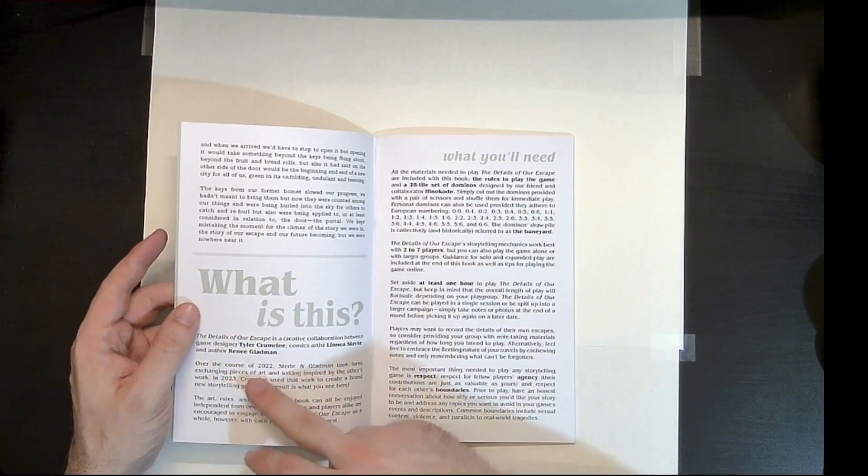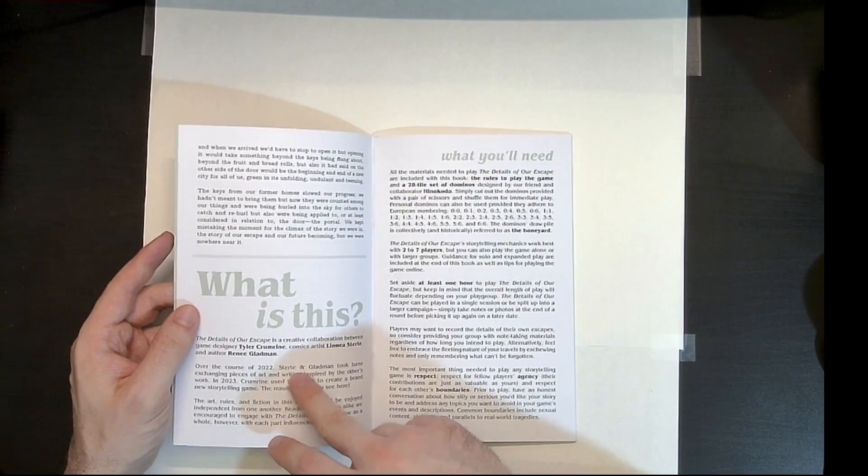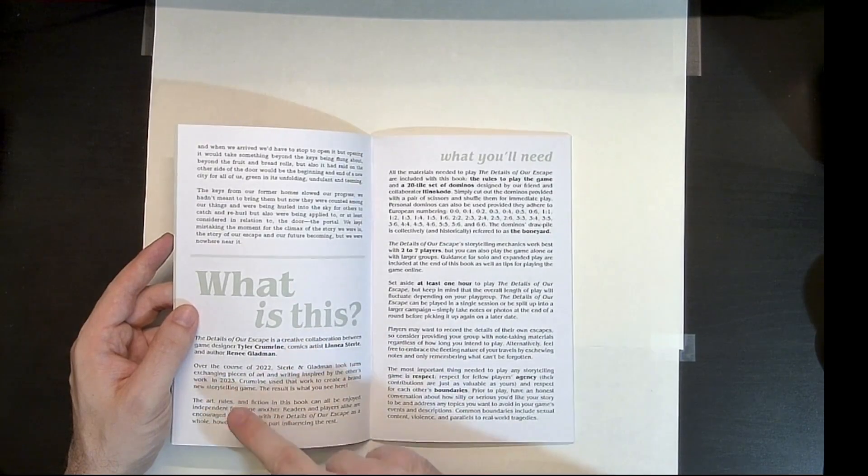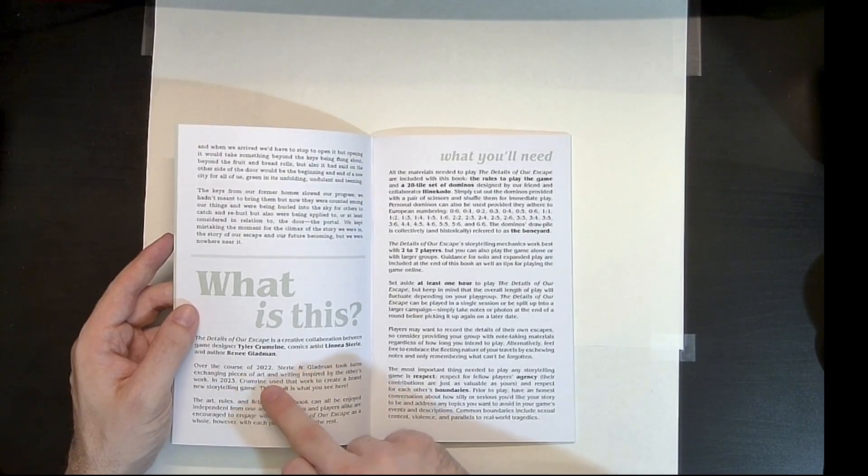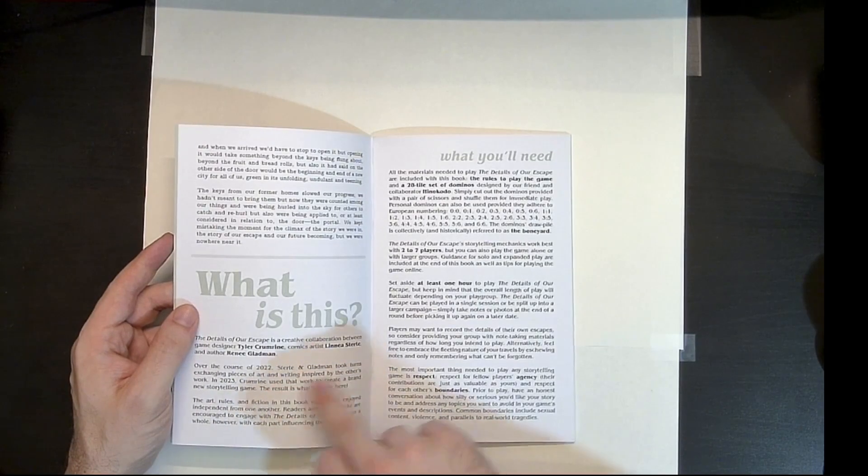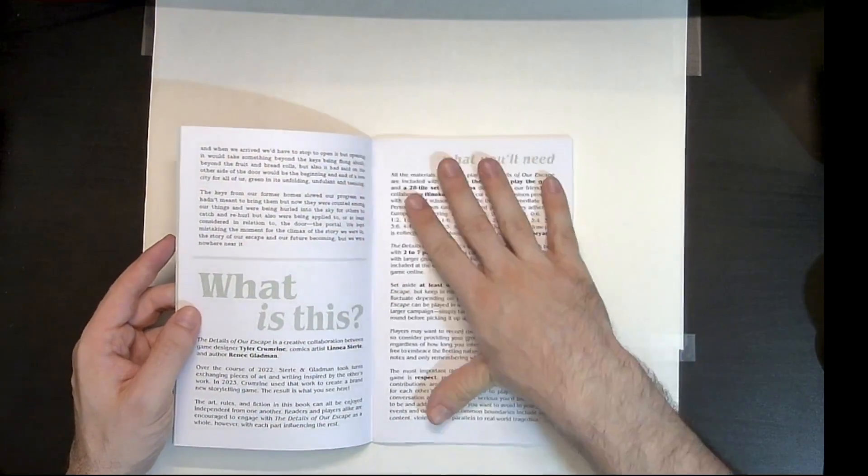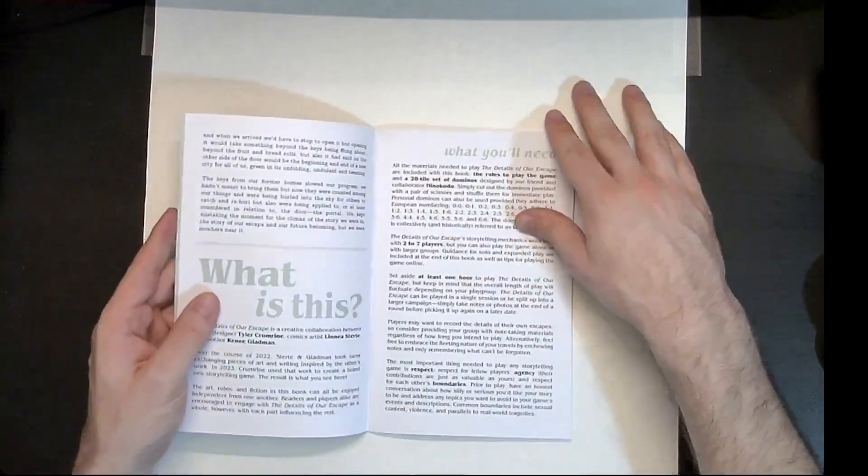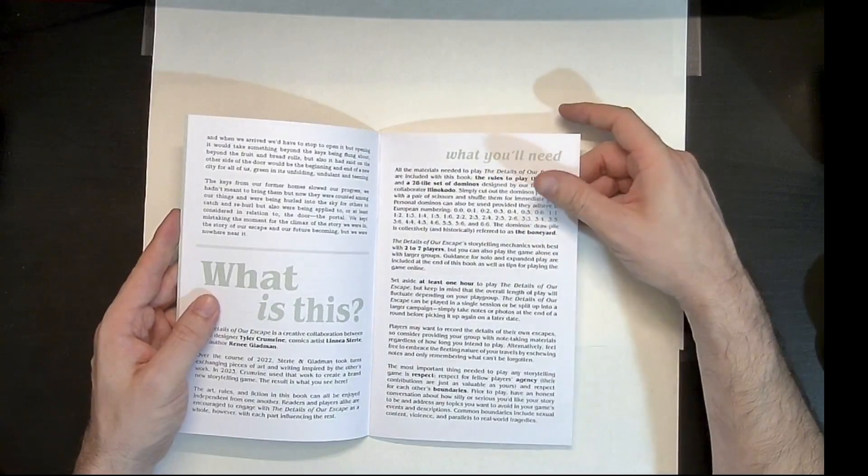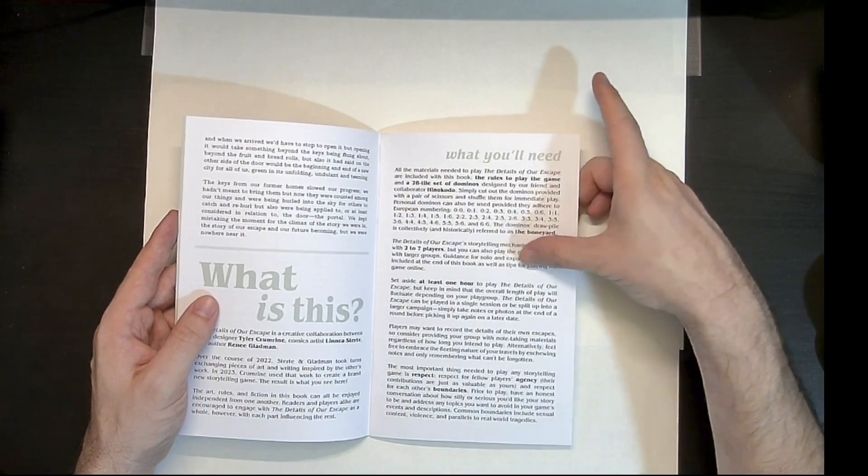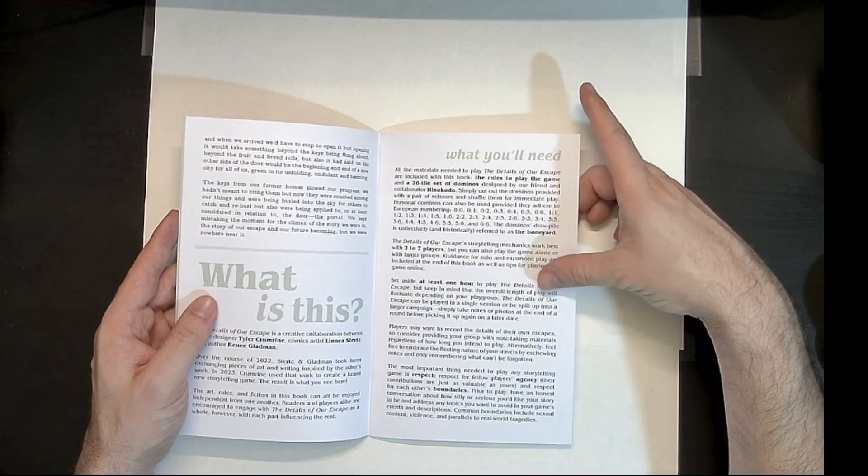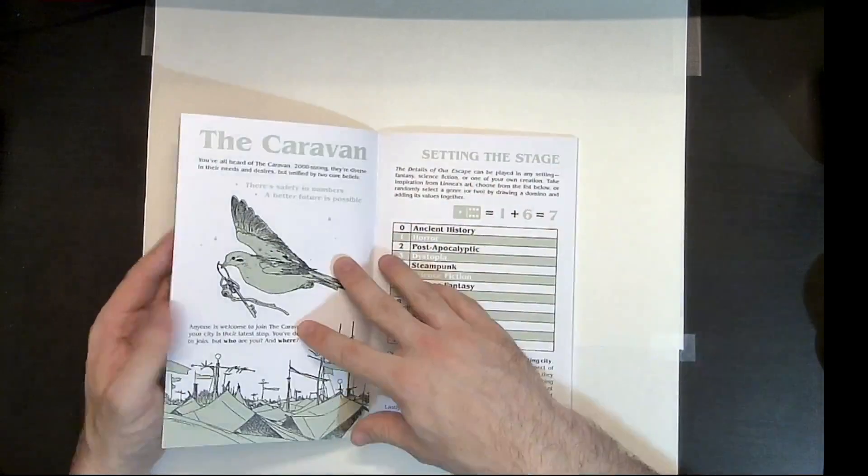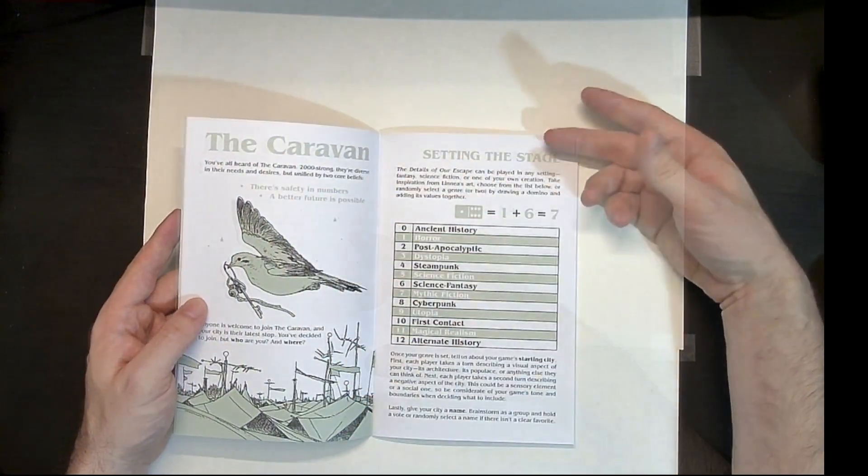So again, this is essentially both a game, but also speculative fiction. So again, it says here over the course of 2022, Sturty and Gladman took turns exchanging pieces of art and writing inspired by each other's work. In 2023, Crumrine used this work to create a brand new storytelling game, which is this. So this is based off of Sturty and Gladman's art and speculative fiction. So yeah, it's set up for two to seven players. At least one hour should be taken to play.